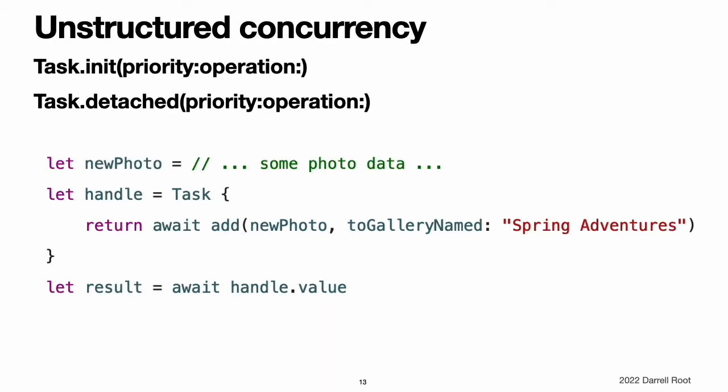Unstructured Concurrency. In addition to the structured approaches to concurrency described in the previous sections, Swift also supports unstructured concurrency. Unlike tasks that are part of a task group, an unstructured task does not have a parent task. You have complete flexibility to manage unstructured tasks in whatever way your program needs, but you are also completely responsible for their correctness. To create an unstructured task that runs on the current actor, call the Task(priority:operation:) initializer. To create an unstructured task that is not part of the current actor — known more specifically as a detached task — call the Task.detached(priority:operation:) class method. Both of these operations return a task handle that lets you interact with the task, for example to wait for its result or to cancel it.